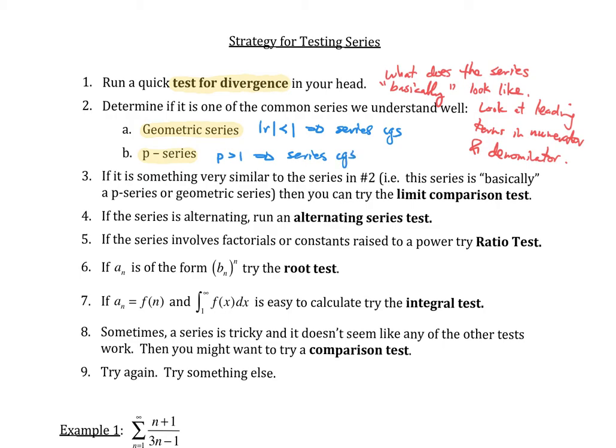The first thing I do in general is try to see what the series basically looks like. If the limit doesn't go to zero, you're done. If it is one of these two series, you're done. If it only basically looks like one of those two series, then you could try to apply the limit comparison test.